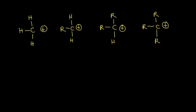Let's take a look at these four carbocations. Carbocations have a positive one formal charge on that carbon. Because there's a positive charge on it, those carbons have only three bonds and only six electrons around them. We know carbon likes to have four bonds and be surrounded by an octet, and that makes carbocations very reactive.